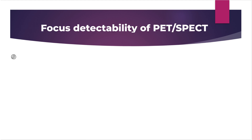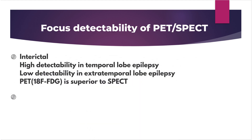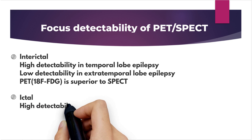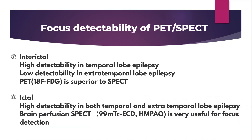In the interictal phase, neuronuclear imaging has a high ability to detect epileptic focus in temporal lobe epilepsy, while it does not have a high ability in extratemporal lobe epilepsy. Glucose metabolism PET has a higher detection ability than SPECT. During seizures, neuronuclear imaging has high detection ability in both temporal and extratemporal lobe epilepsy.